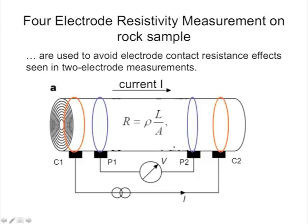We span part of the distance between those current electrodes with our potential or voltage electrodes, P1 and P2, which we wrap around the rock sample. They are inside the current electrodes and between them. We put our probe between P1 and P2 and use a voltmeter to measure the voltage difference. That gives us resistance equal to voltage divided by current, and knowing the length and area of the rock sample, we can translate that to a resistivity.